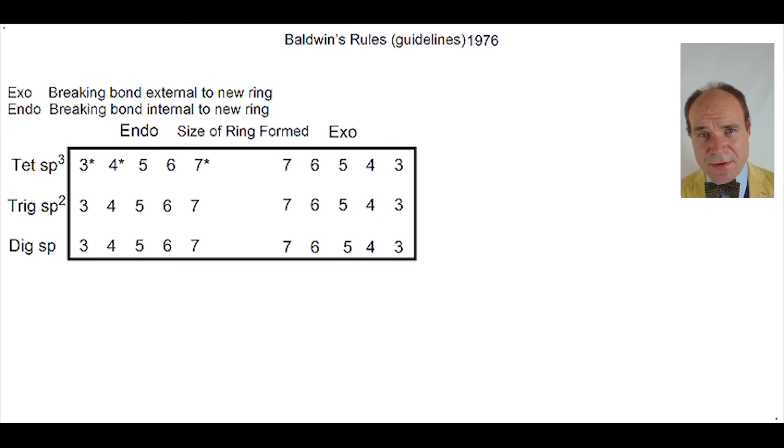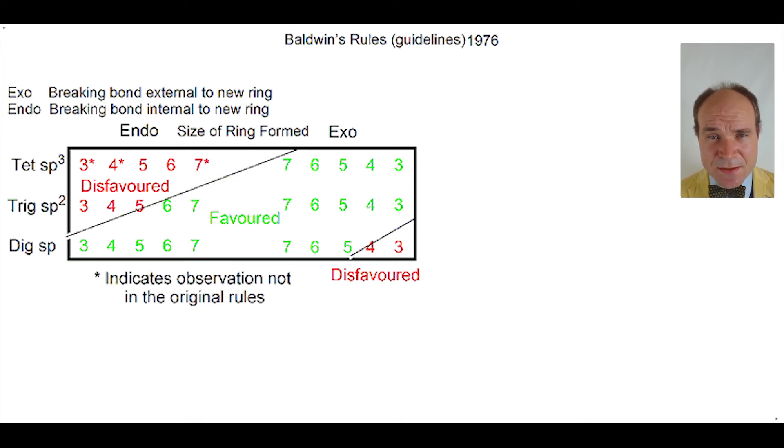This allows us to create a little table. Some of these reactions are favoured and some are unfavoured. Baldwin observed that this seemed to be the pattern regarding favoured and unfavoured reactions. There are a few of these observations that were not in the original paper and they are marked with an asterisk.